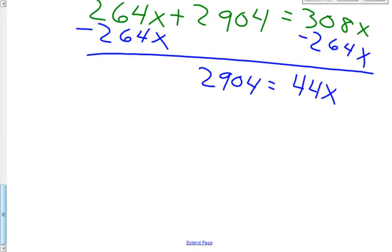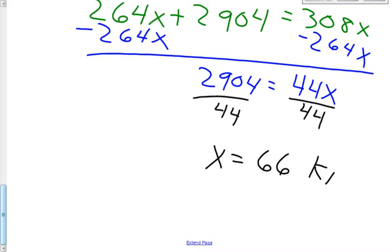And then last step of our problem here. We got to get x all by itself, so we need to divide by 44. 2904 divided by 44, x equals 66. And we're talking about a rate, so we're talking kilometers per hour. x equals 66 kilometers per hour.